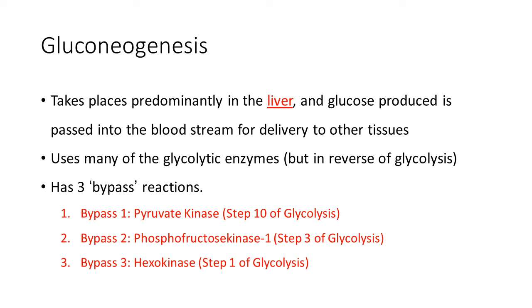Gluconeogenesis takes place predominantly in the liver, whereby glucose is produced and passed into the bloodstream for delivery into other tissues. Gluconeogenesis is essentially the reverse of glycolysis and has three main bypass reactions.